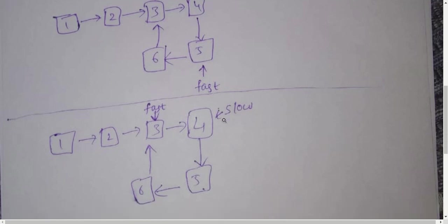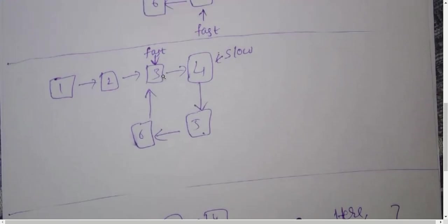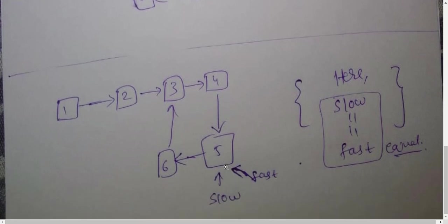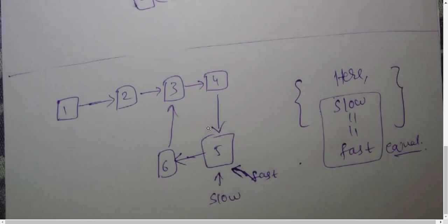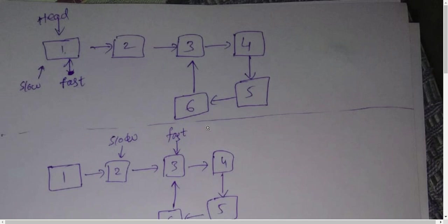Next, slow comes from 4 to 5, and fast jumps two nodes and also arrives at 5. You can see that slow and fast are now pointing to the same node. When both are equal, it means the linked list has a loop, because if there were no loop, they travel at different speeds and the list would end. But since they both meet, there is a loop. So let's write the logic for this.